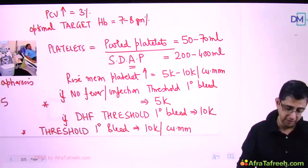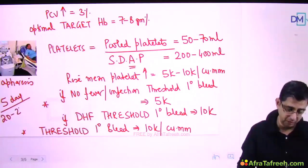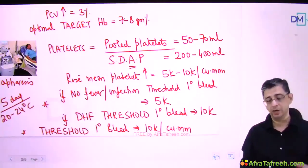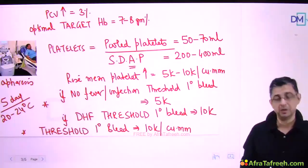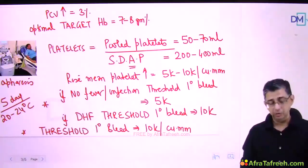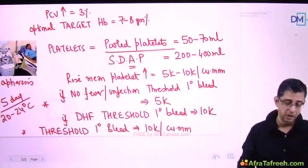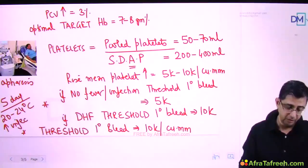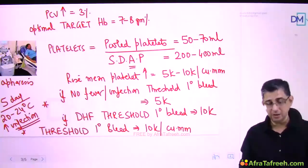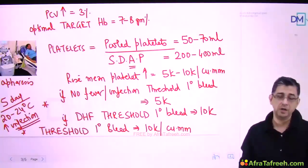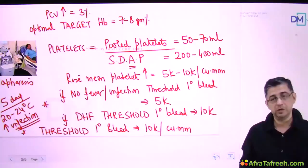The shelf life of platelets is approximately five days. They are stored at room temperature - 20 to 24 degrees Celsius - in a state of constant agitation, and once released from the blood bank they should be transfused as early as possible. The chances of infection are higher for platelets because they are stored at room temperature.